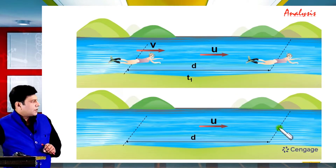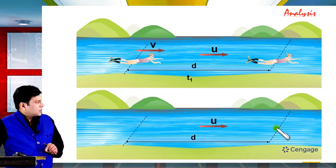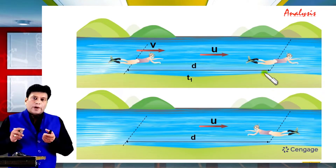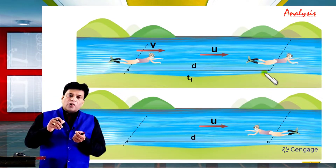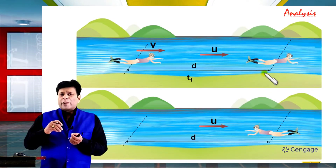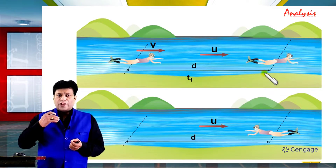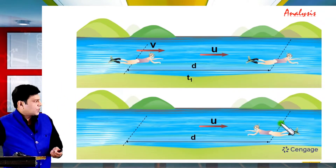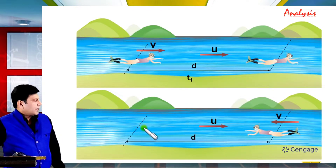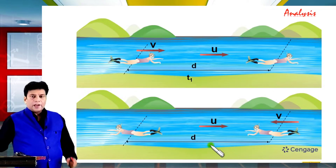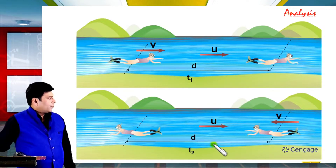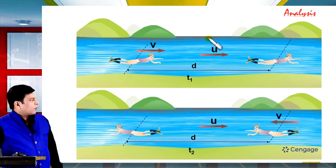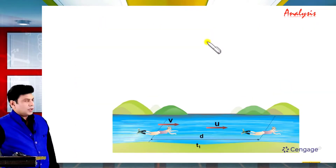Now for the upstream return journey: starting from the end position, the swimmer moves back. The velocity of the swimmer relative to water will be constant in magnitude, that is V, regardless of direction. The time taken in this case is T2.